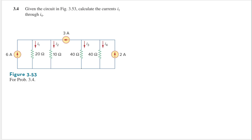Let's set our bottom-most node as our ground, so this is the reference node where the voltage will be zero. Now let's label our nodes — we have two other nodes here. Let's name this node V1 and this node V2.